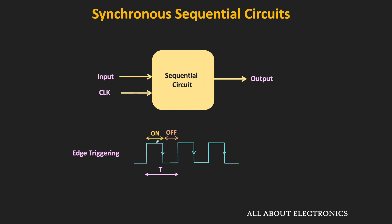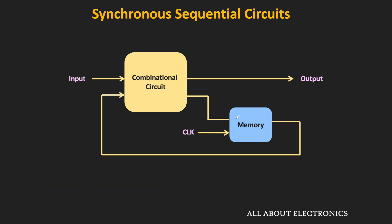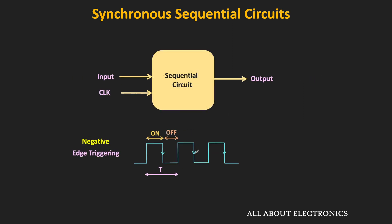Negative edge-triggered circuits respond during the falling edge — that is, when there is a high-to-low transition in the clock signal. In edge-triggered sequential circuits, the memory element responds to the input change only at either the rising or falling edge. Whatever input is present during that edge, the memory element responds to it. Once that edge passes, even if the input changes, it will not respond until the next clock transition.